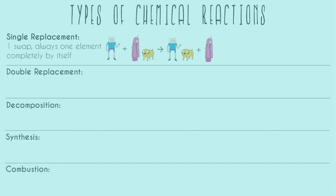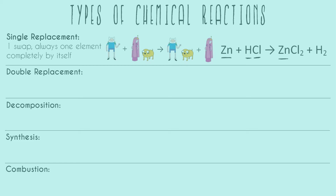Now that you've seen the cartoon picture, here's what an example of a reaction would look like. In this case, Finn is basically zinc, because zinc is only one element. Princess Bubblegum would be hydrogen, and Jake would be chlorine. So we can see that in our products, zinc, which used to be alone, is now with chlorine, and hydrogen, which used to be with chlorine, is now alone.